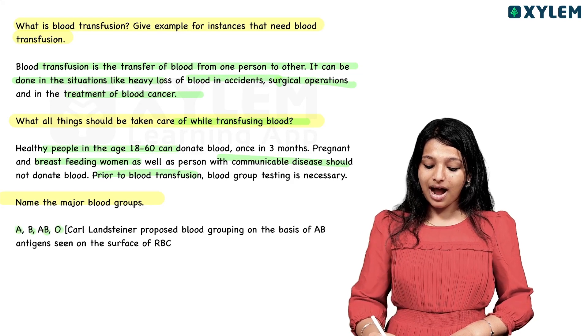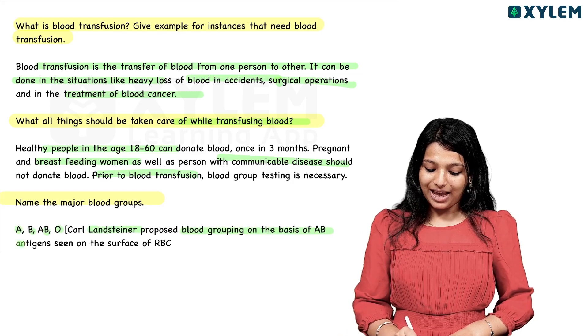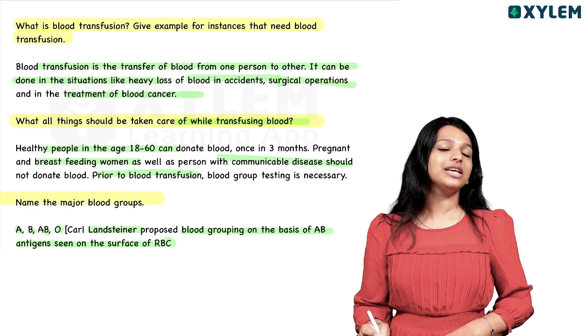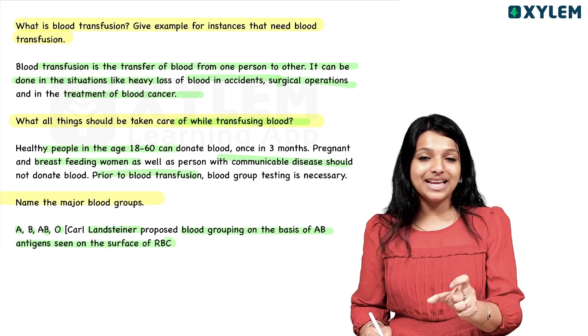Karl Landsteiner proposed blood grouping on the basis of A and B antigens seen on the surface of RBC. In RBC, the presence of the antigen determines the blood group.